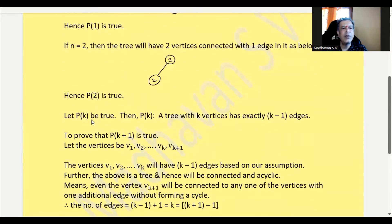Now let us assume P of k to be true, which means the statement will become P of k as a tree with k vertices has exactly k minus 1 edges.